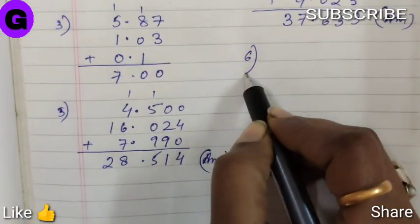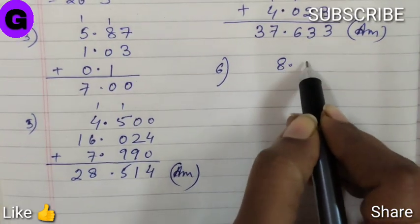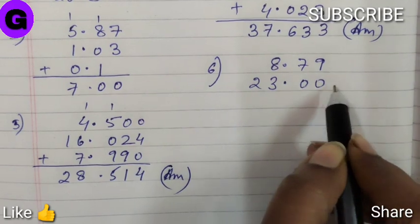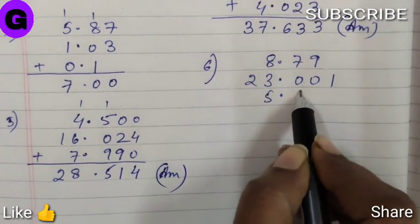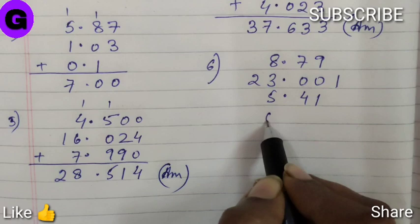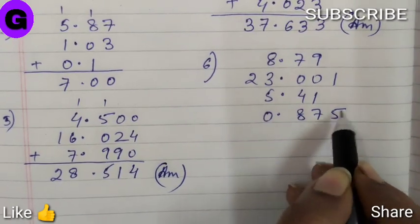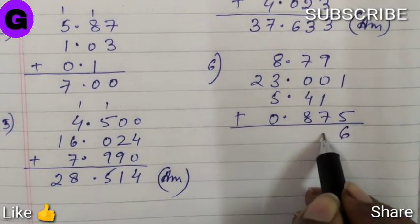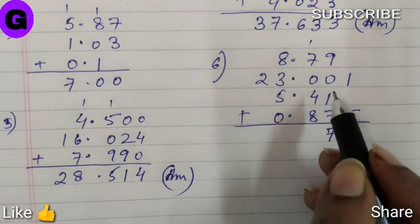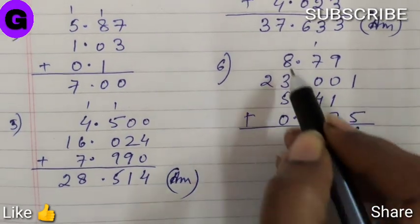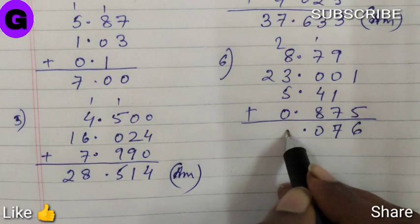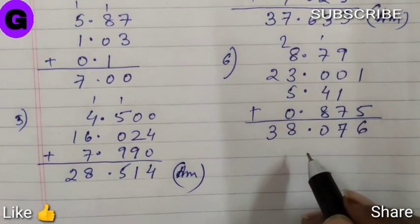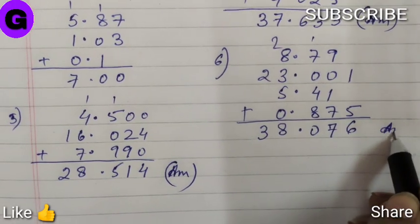Sum number six, 8.79, 23.001, 5.41, 0.875. The answer is 38.076.